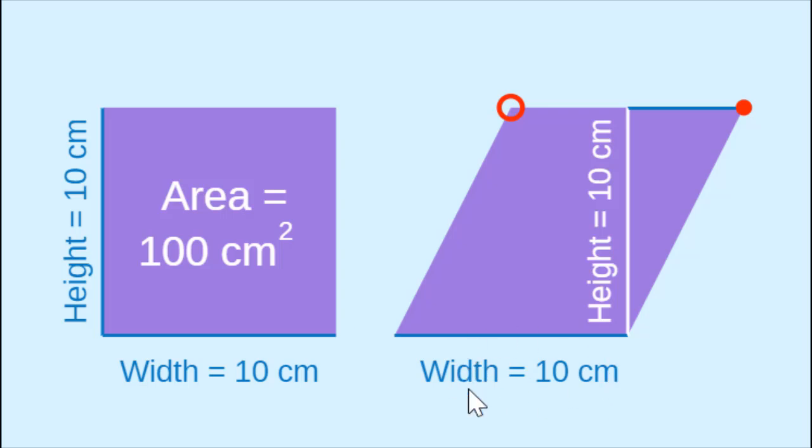You multiply the width or the length down here times the height. And to see how that would be true, we can drag the corner from our parallelogram over here. And if we drag it over and put it over here, we see that we have the same shape as this 10 by 10 square. So that's how a parallelogram and a rectangle can share the same formula for area.